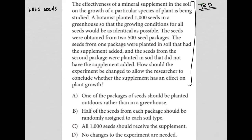Next sentence: the seeds were obtained from two 500-seed packages. So these 1,000 seeds actually came from two different packages, each with 500. The seeds from one package were planted in soil that had the supplement added — I'll call that S plus for supplement added. And the seeds from the second package were planted in soil without the supplement — I'll call that S minus. The question asks: how should the experiment be changed to allow the researcher to conclude whether the supplement has an effect on plant growth?